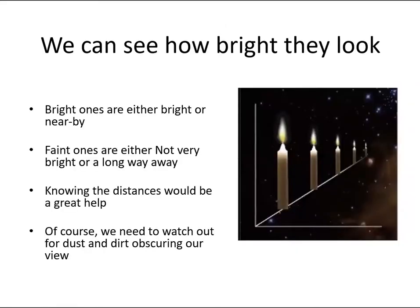The reason that they look different brightnesses can either be because they are more or less powerful in themselves or it can be that they are at different distances. So bright ones are either nearby or very powerful and further away. Faint ones are either not very bright or just a very long way indeed. Of course there are other confounding factors if there are obscuring clouds of dust in between us and a distant star.